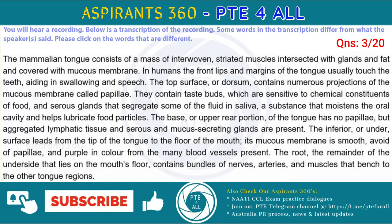The mammalian tongue consists of a mass of interwoven, striated muscles interspaced with glands and fat and covered with mucous membrane. In humans the front tips and margins of the tongue usually touch the teeth, aiding in swallowing and speech. The top surface, or dorsum, contains numerous projections of the mucous membrane called papillae. They contain taste buds, which are sensitive to chemical constituents of food, and serous glands that secrete some of the fluid in saliva, a substance that moistens the oral cavity and helps lubricate food particles.